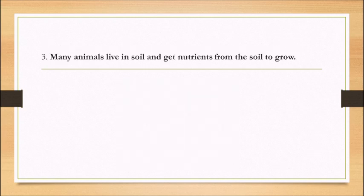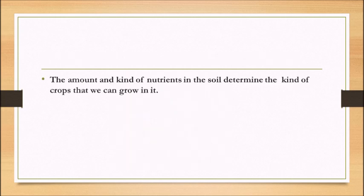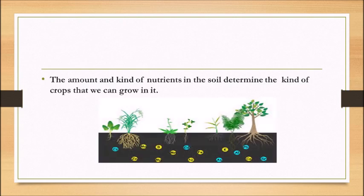Many animals live in soil and get nutrients from the soil to grow. The amount and kind of nutrient in the soil determine the kind of crops that we grow in it.